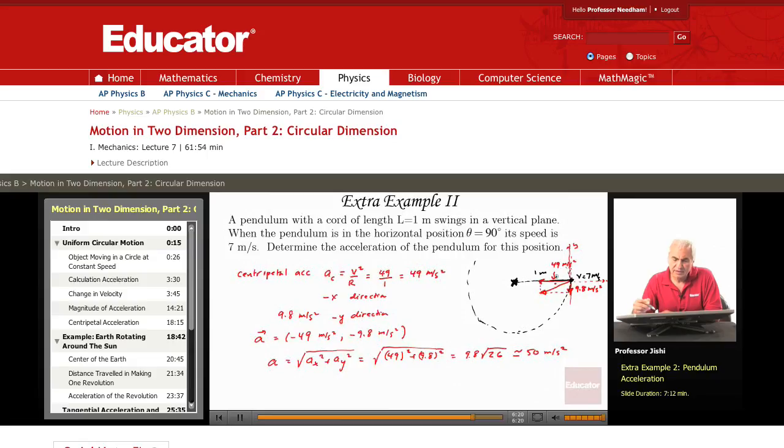I can find the angle here if I choose to. The tangent of the angle is 9.8 over 49, the opposite over adjacent. 9.8 divided by 49, that's just 1 over 5. So I can get the magnitude and direction of the acceleration vector.